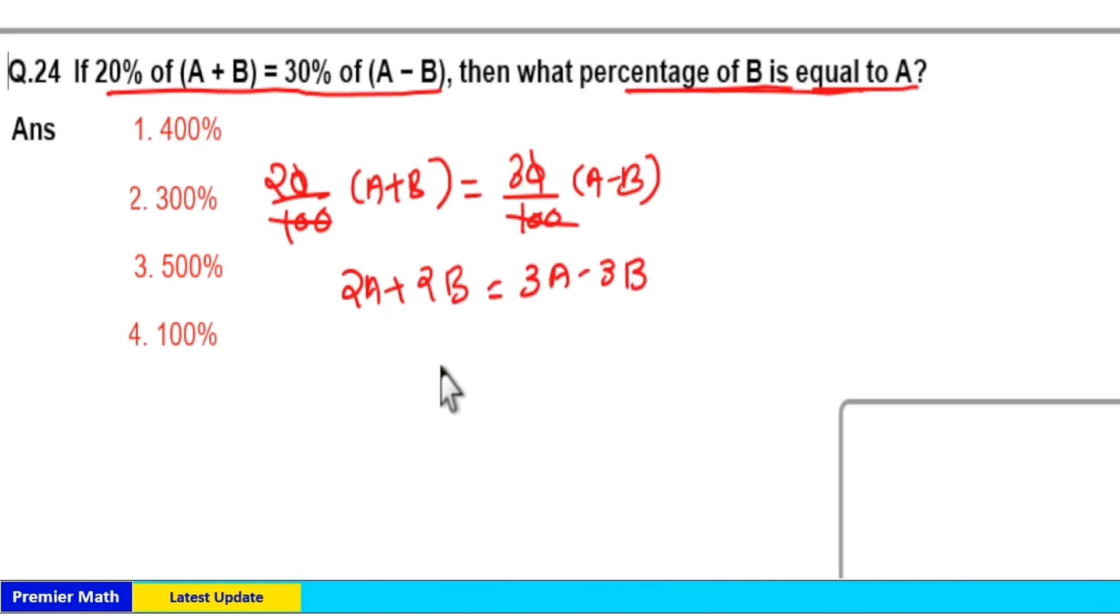From this 3a minus 2a is a, 2b plus 3b is 5b.